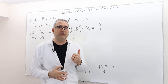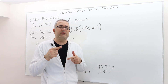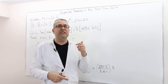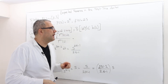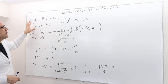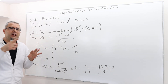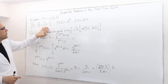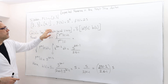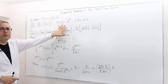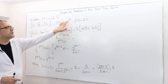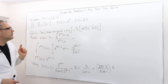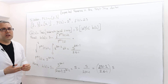In this episode, I'm going to calculate the expected revenue of the seller in the first price auction, keeping exactly the same numerical example from the previous episode. The signals are distributed on the interval [0,1] according to the CDF F(s) = s squared, and therefore the density function is 2s.